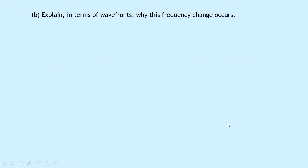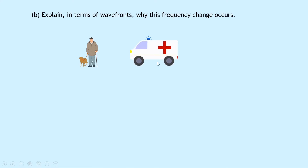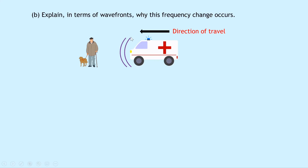Part B says to explain in terms of wave fronts why this frequency change occurs. Imagine our pedestrian is an old man with a dog, and there's an ambulance approaching him to the left, which means the left is the direction of travel. Because the ambulance has a siren on it, it's a moving source of sound waves. So because the source of sound waves is moving towards the pedestrian, the wave fronts at the front of the ambulance are going to bunch up and be quite close together. Whereas behind the ambulance, the wave fronts are going to be more spaced out and more separated.